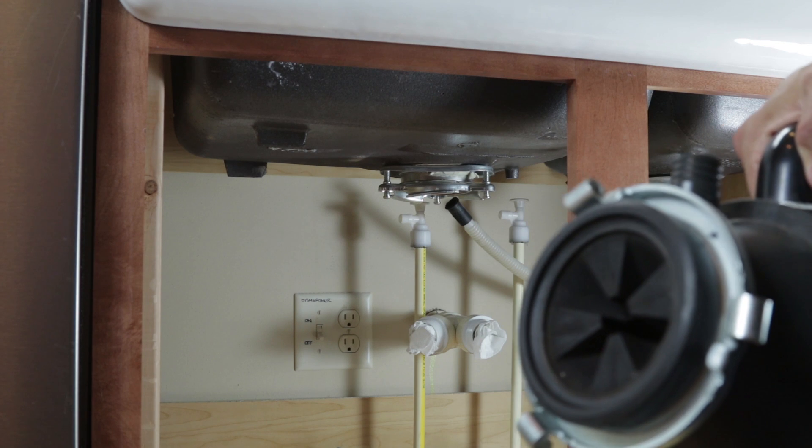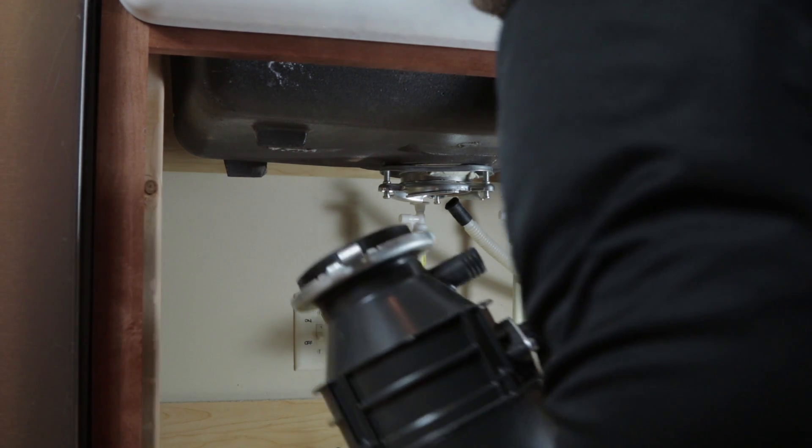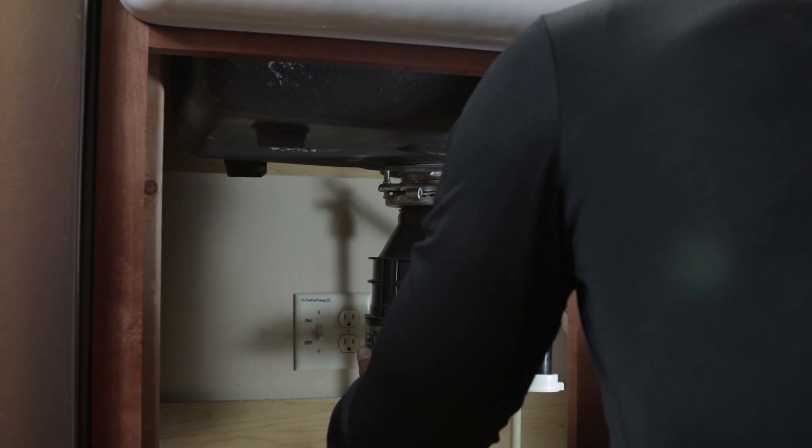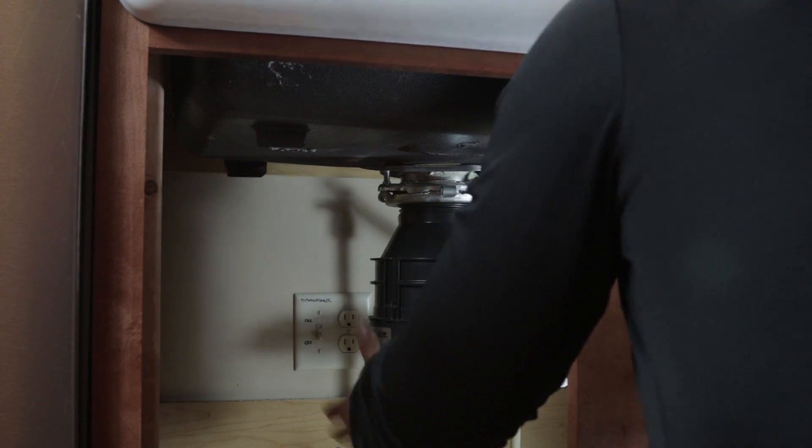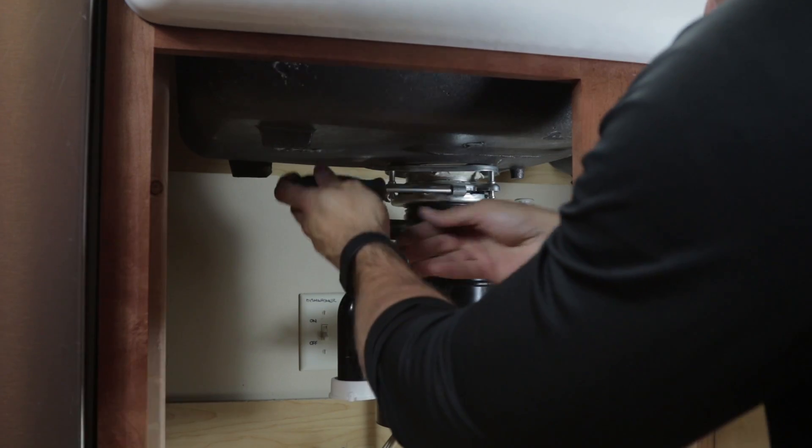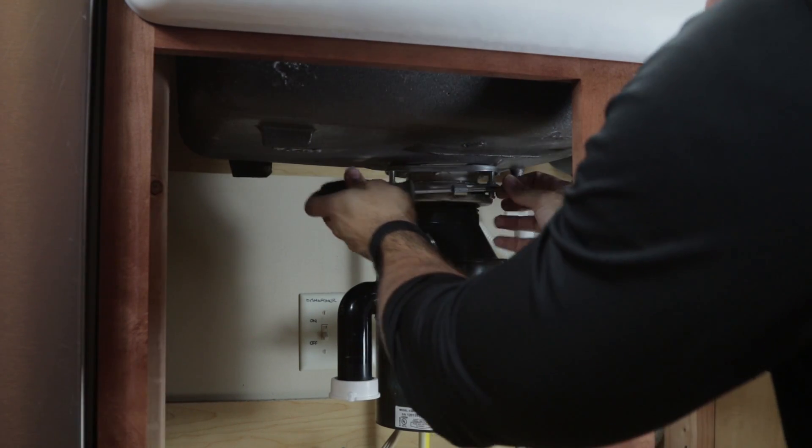With the sink baffle facing up, align the lower mounting ring on the disposal with the mounting ring on the sink. Twist the lower mounting ring clockwise to mount it. You may need a screwdriver to tighten it completely.